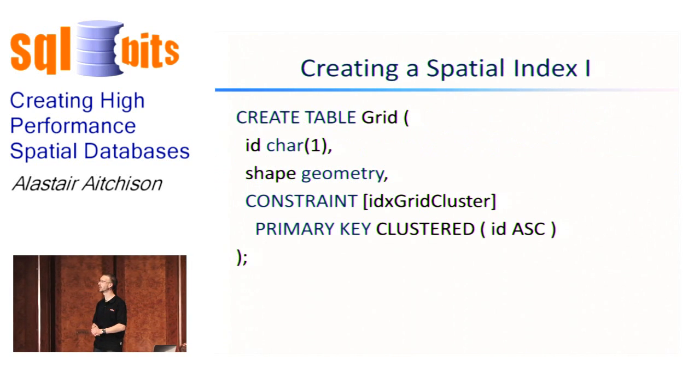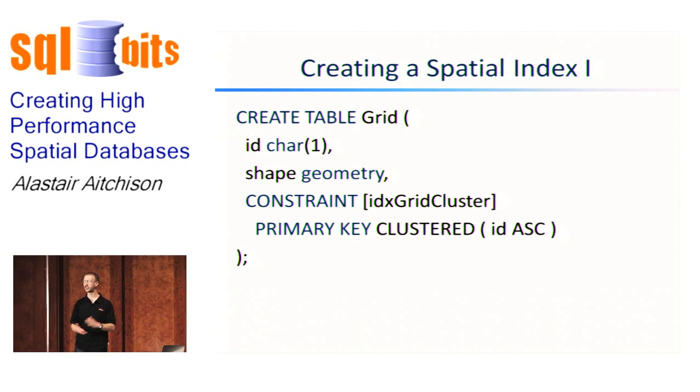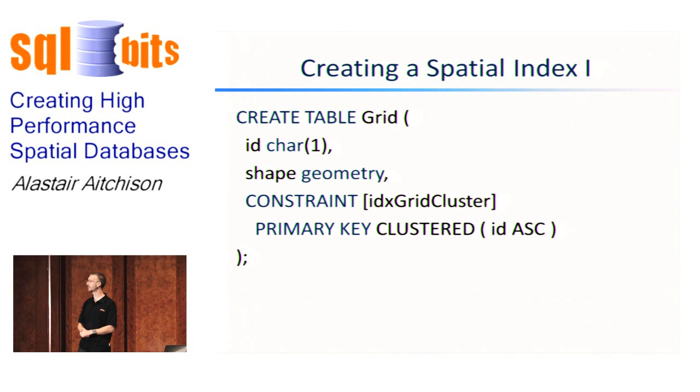Here's the SQL required to create a simple table. This table contains two columns: an ID column which is just a char column, and a shape column which is a geometry column. The only other point to note here is I've added a clustered primary key to the table.